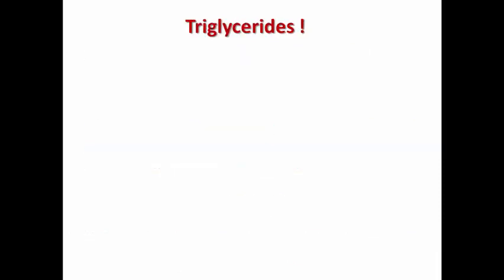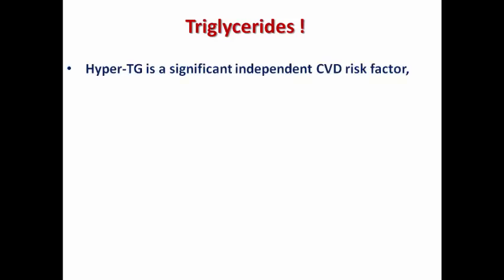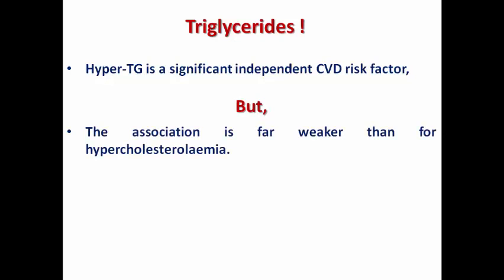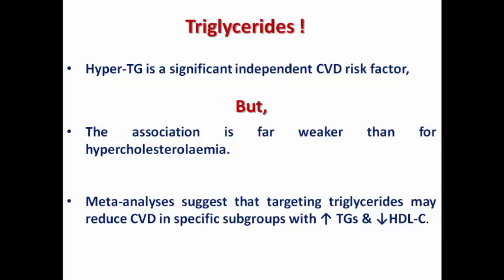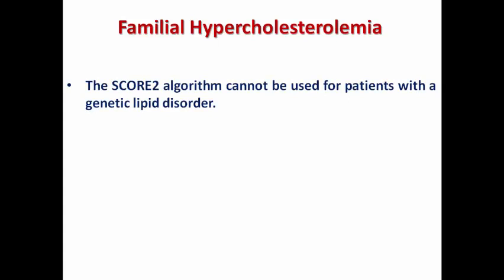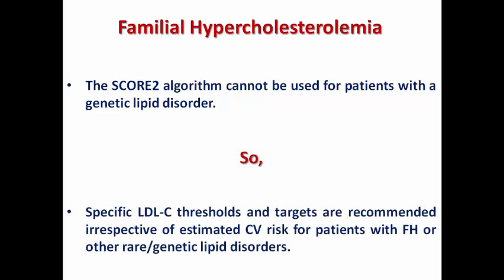Triglycerides have a strong dilemma regarding their role in atherosclerotic cardiovascular disease. Hypertriglyceridemia is a significant independent risk factor for cardiovascular disease, but still weaker than the impact of hypercholesterolemia. Some meta-analyses suggest that targeting triglycerides may reduce cardiovascular disease in certain subgroups — such as those with elevated triglycerides and reduced HDL, for example diabetic patients and those with metabolic syndrome. In patients with familial hypercholesterolemia, the SCORE2 algorithm should not be used, as they have a different risk stratification process requiring specific LDL thresholds and targets.